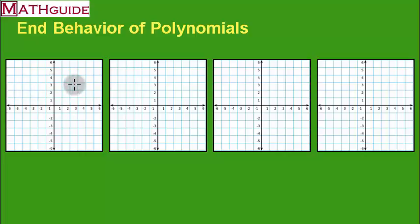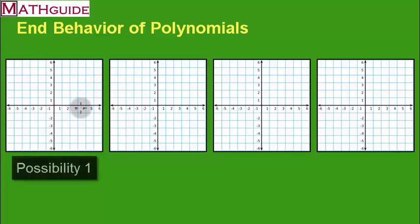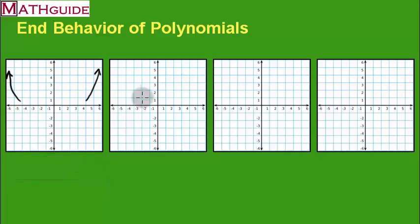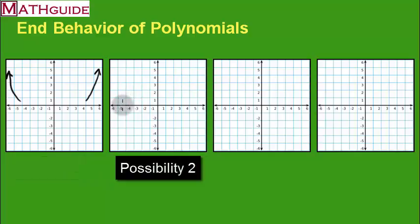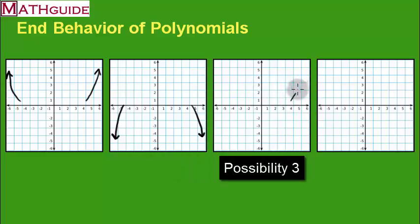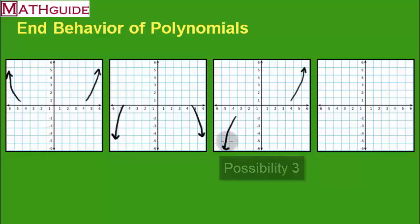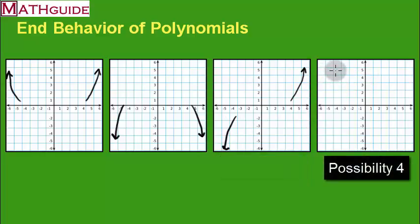We're talking about the extreme left and right sides of the graph. With polynomials, what could possibly happen is: case one, the right side goes up forever and the left side goes up forever. Case two, both sides go down. Case three, the right side goes up and the left side goes down. And case four, the left side goes up and the right side goes down.